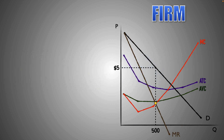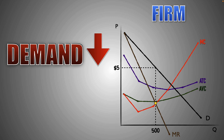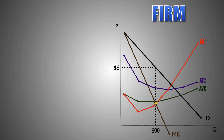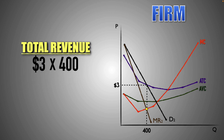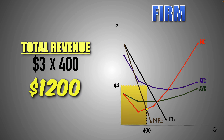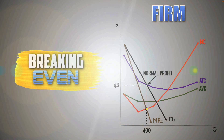Likewise, if demand for Good M decreases, the price per unit and the marginal revenue earned by each additional unit sold in the industry will decrease. This will be visualized with a leftward shift of the demand and marginal revenue curves. With a lesser marginal revenue per unit, the firm will seek a new profit maximization point and decrease the quantity of Good M it produces until marginal revenue equals marginal cost, allowing the price-making firm to set a new market price along the demand curve at $3 per unit. Now that product price has fallen to $3 and the firm has reduced its output to 400 units, the firm will decrease its total revenue from $2,500 to $1,200, leading the firm's economic profits to turn into normal profit.